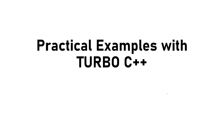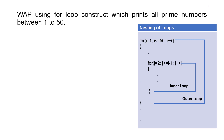Now we'll see one more example, and this example we will see using Turbo C++. Write a program using a for loop construct which prints all prime numbers between 1 to 50. We'll start with: what is a prime number? Prime numbers are those numbers which are only divisible by 1 and themselves. For example, if we are talking about 17, we can say 17 is a prime number because 17 is only divided by 1 and itself.